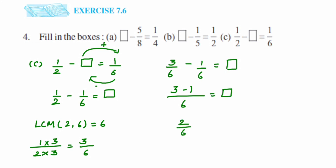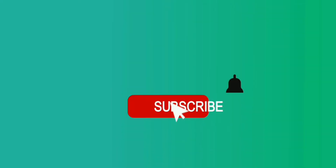So we subtract: 3 upon 6 minus 1 upon 6. Denominators are the same, so we subtract the numerators: 3 minus 1 is 2, giving 2 upon 6 equal to the blank. We can simplify — 2 upon 6 reduces to 1 upon 3. So the blank is 1 upon 3. That's it — a simple problem. I hope it's clear. If you have any questions or doubts, drop a comment below, and thank you so much for watching.